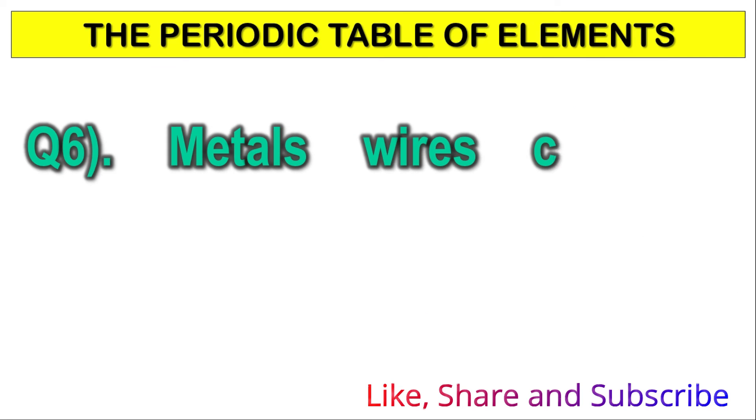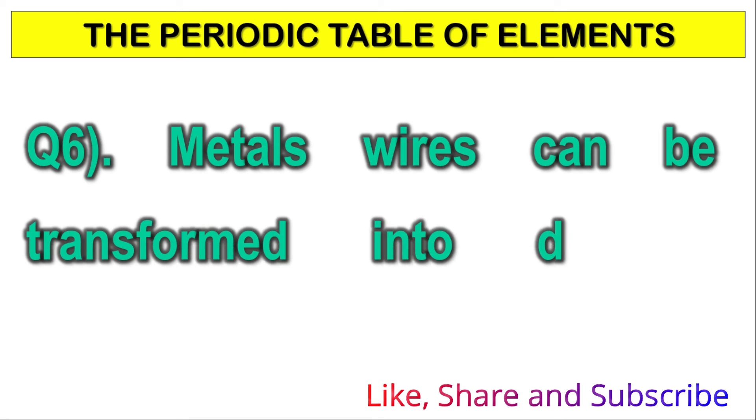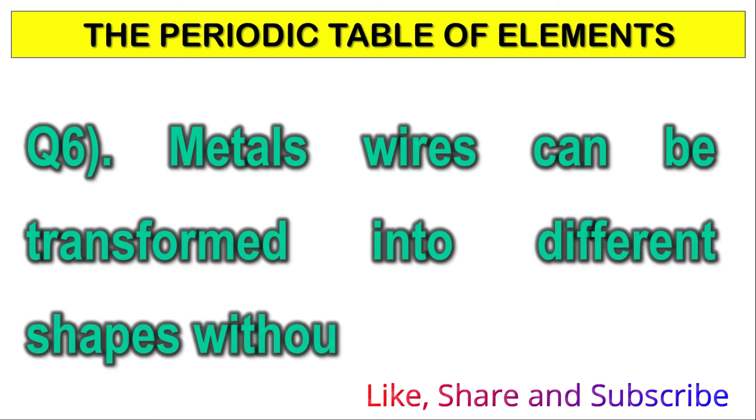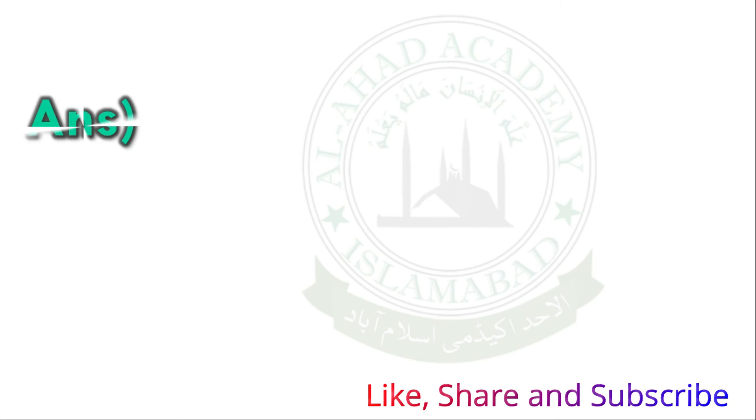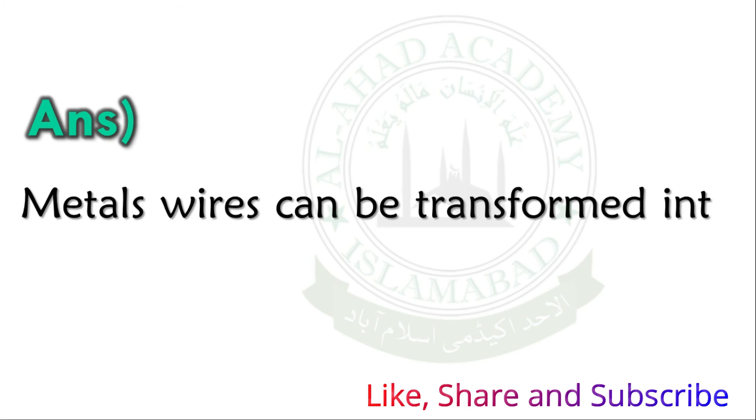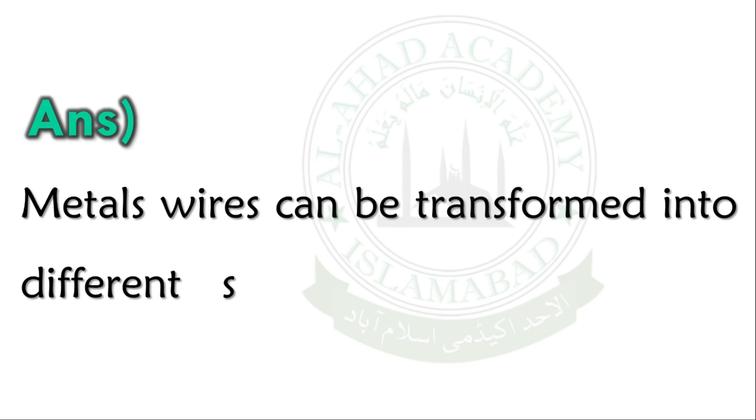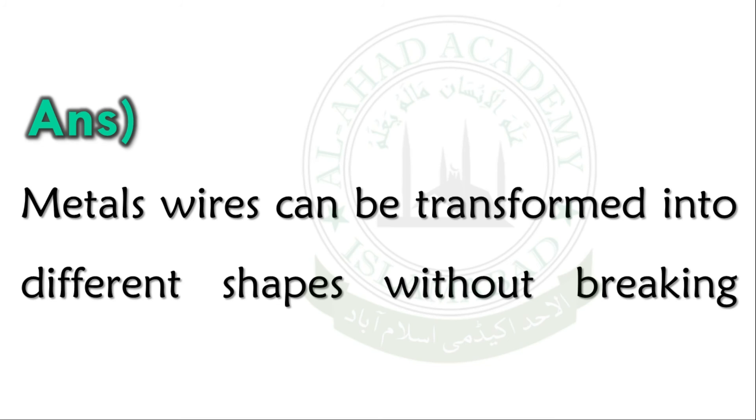Why can metal wire be transformed into different shapes without breaking? Answer. Metals can be transformed into different shapes without breaking because they are flexible.